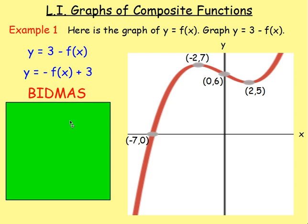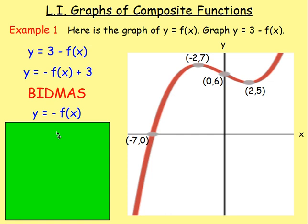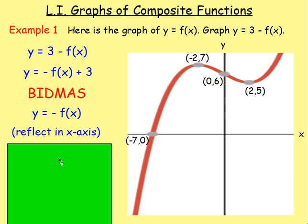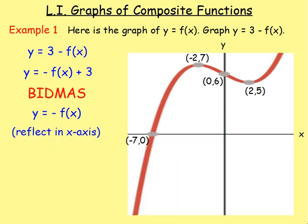Thinking back then to Bidmas. Brackets, indices, divide, multiply, add, subtract. What would come first? Would it be the add? Or would it be multiplying by the negative 1? Well, it's the multiply that comes first. So we'd think about y equals negative f of x. Y equals negative f of x. That's when you reflect the graph in the x-axis.